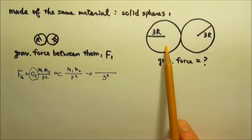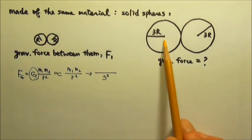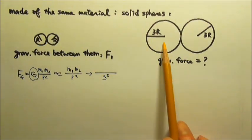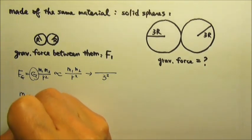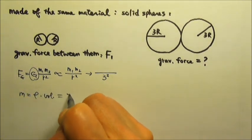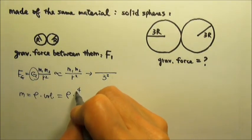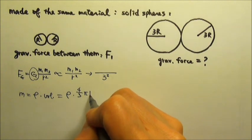What about mass? If we look at one sphere, they are made of the same material—that means they have the same density. So mass is the density times the volume. They have the same density. What is the volume of a sphere? It is 4/3 π R³.